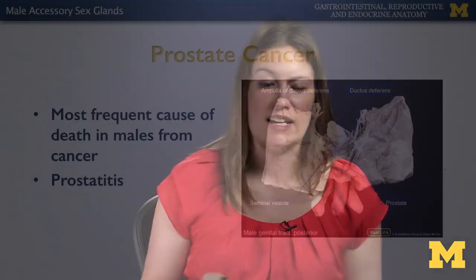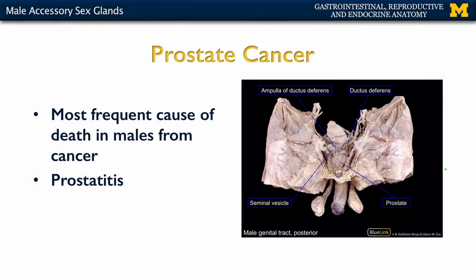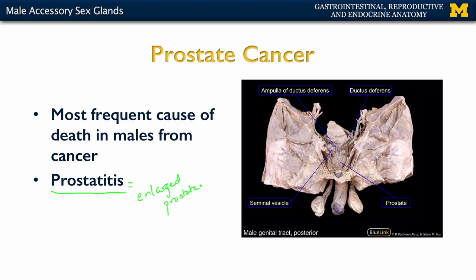The prostate often comes up particularly in terms of pathology. Prostate cancer is now the most frequent cause of cancer death in males — it surpassed lung cancer in the early 1990s — and is much more frequent in older individuals. This is different from prostatitis, a term sometimes used interchangeably with an enlarged prostate, but they're not necessarily the same thing. An enlarged prostate can constrict the prostatic urethra, causing painful or frequent urination in males.